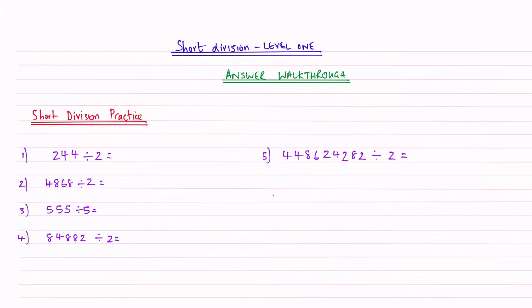Here is the full answer walkthrough for question 1. We draw our line, and then the curly brace, and then the number that we want to divide underneath, and then the number that we're dividing by, which is in this case 2, on the outside. And then we ask ourselves this question, how many 2's going to 2? We're going to take each digit in turn. My first digit is a 2. How many 2's going to 2? The answer is 1.